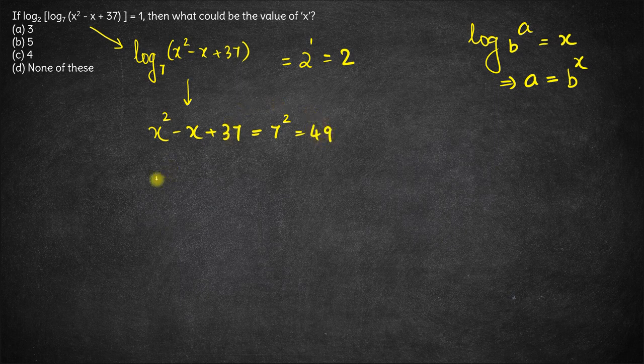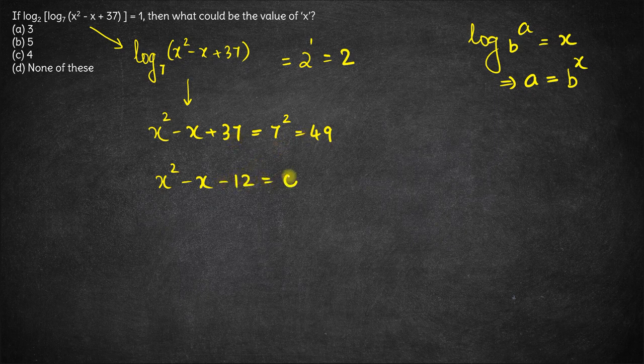Taking 49 on the left hand side, we have x squared minus x, 37 minus 49 is minus 12, which equals 0.